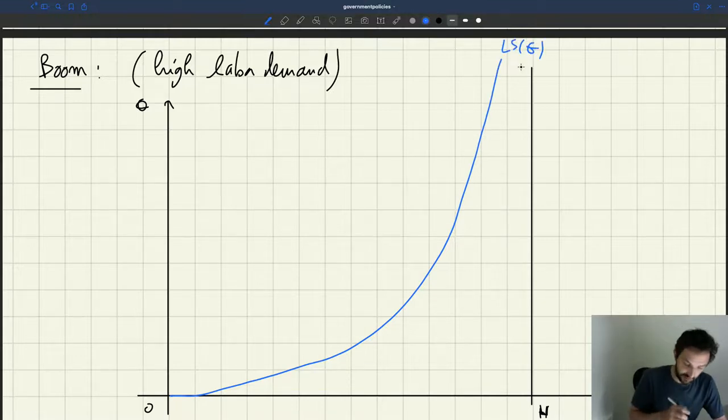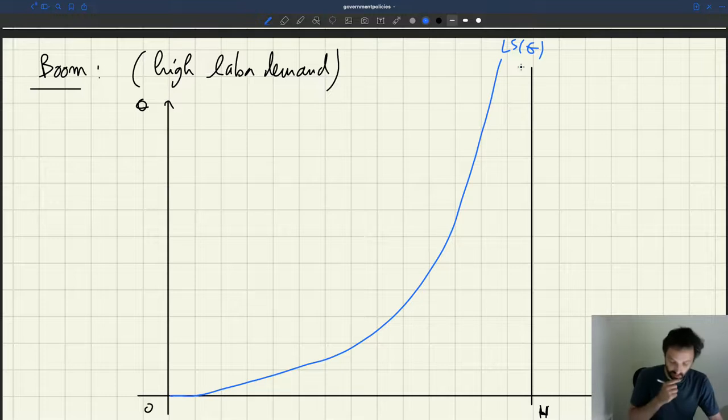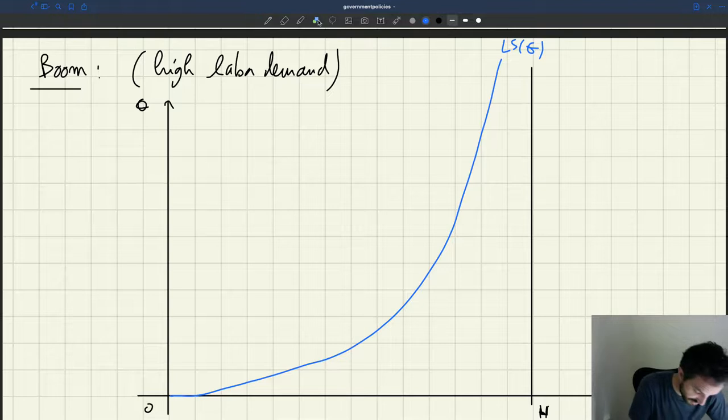So similarly as before, I'm going to draw my labor demand. But now it's a boom. The demand is high. So I'm going to push it much further out. Compared to before. I'm going to push it here.